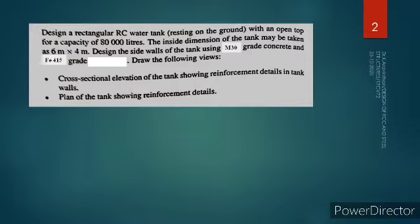The inner dimension of the tank may be considered as 6 meter by 4 meter. We have considered the volume of water which has to be retained, and the inside dimension of the tank is 6 meter by 4 meter. We have only one dimension yet to be identified — that is the height. Next, we design the sidewall using M30 grade concrete and Fe415 grade steel. We have to draw the cross-sectional elevation showing reinforcement detail at the corner and center of the wall.